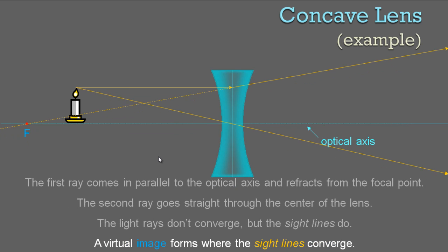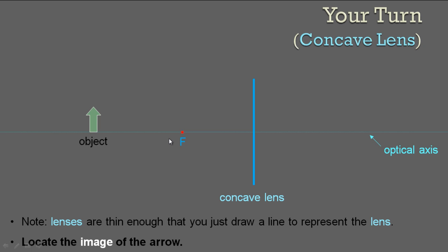A virtual image forms where the sight lines converge. This is different from mirrors — when images formed on the same side as the object in a mirror, those were real images. Since you can see through lenses, a virtual image forms whenever the image is on the same side of the lens as the object. The sight lines cross there, and since we started from the tip of the object, that's the tip of our image — a virtual, upright image.